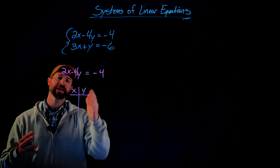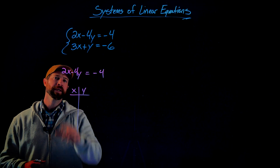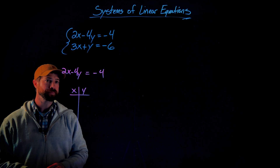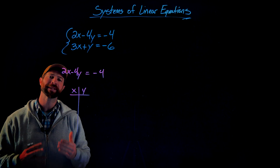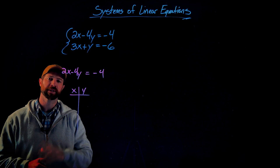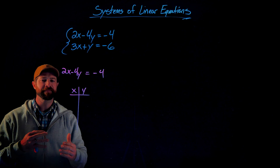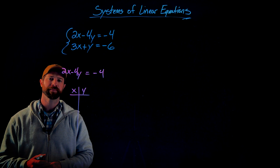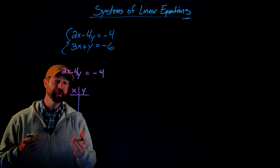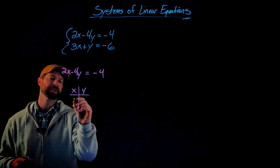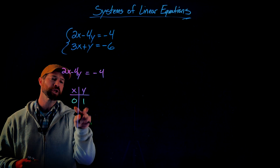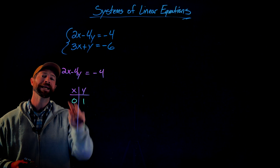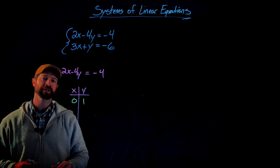For instance, this first equation in the system: 2x minus 4y equals negative 4. This is a linear equation with infinite solutions. A solution to this equation is a value for x and y that satisfy this equation. Here are a few examples of some solutions: (0, 1) is a solution. If I plug in 0 for x and 1 for y, it will solve this equation.